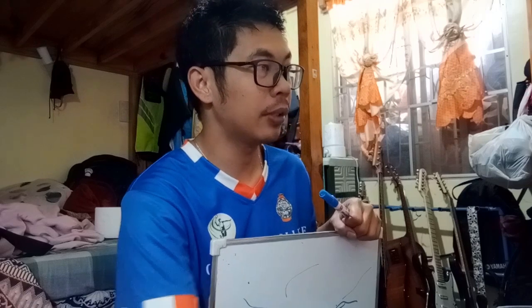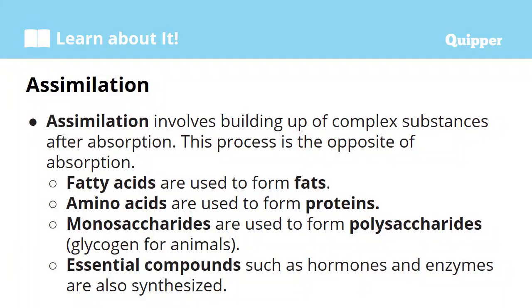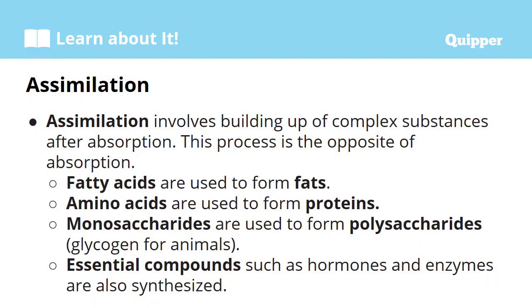Now we go to the fifth process, which is assimilation. It involves the building up of complex substances after absorption. This process is the opposite of absorption. So from fatty acids, they become fats again. From amino acids, they become proteins. From monosaccharides, they become polysaccharides, and essential compounds such as hormones are synthesized.